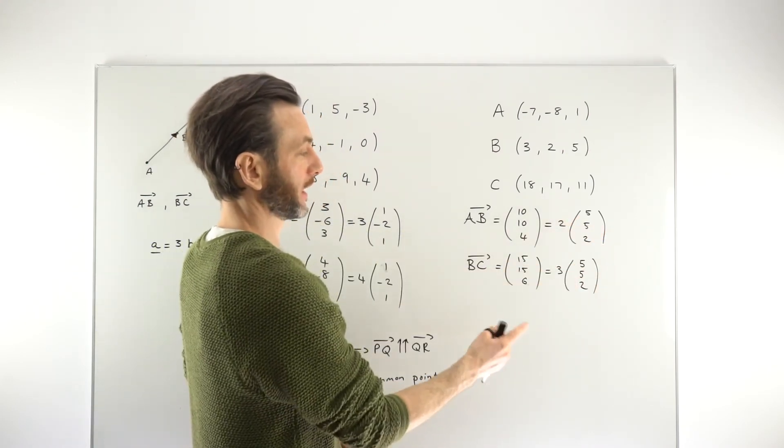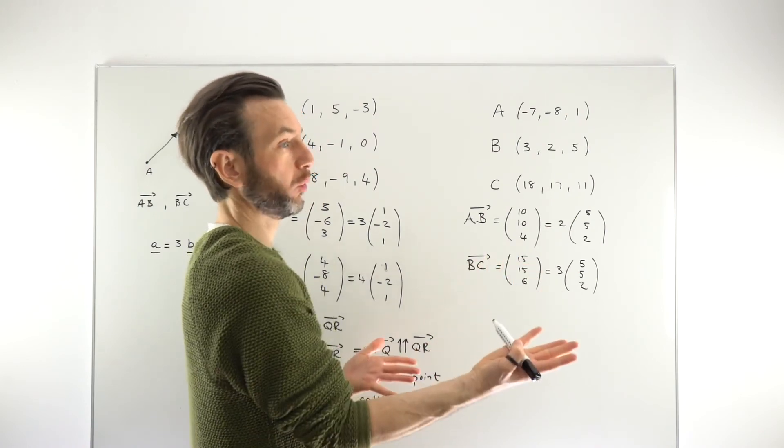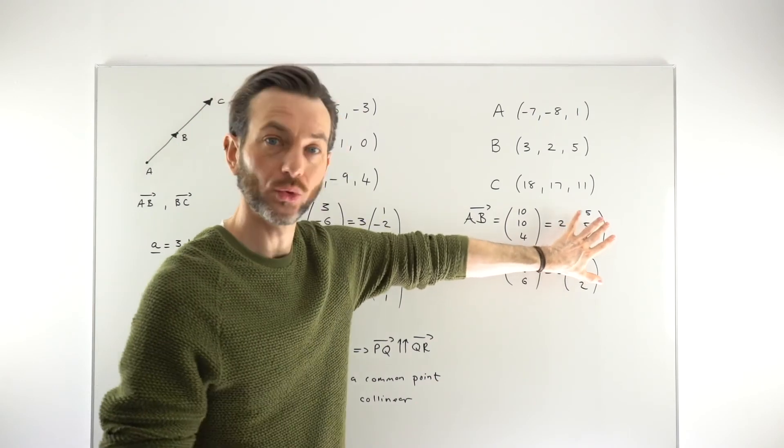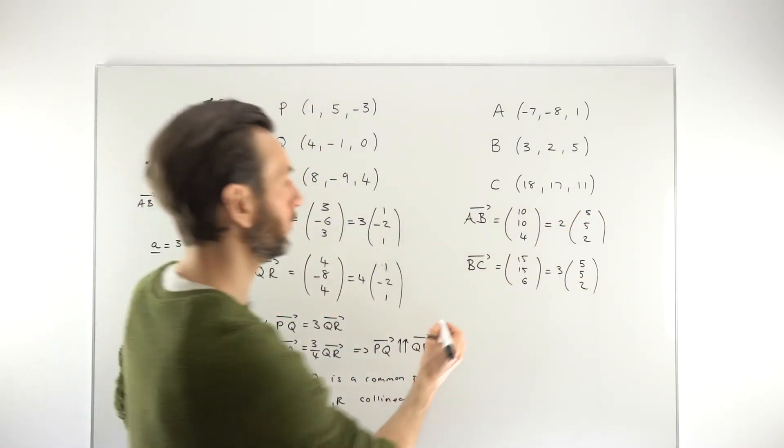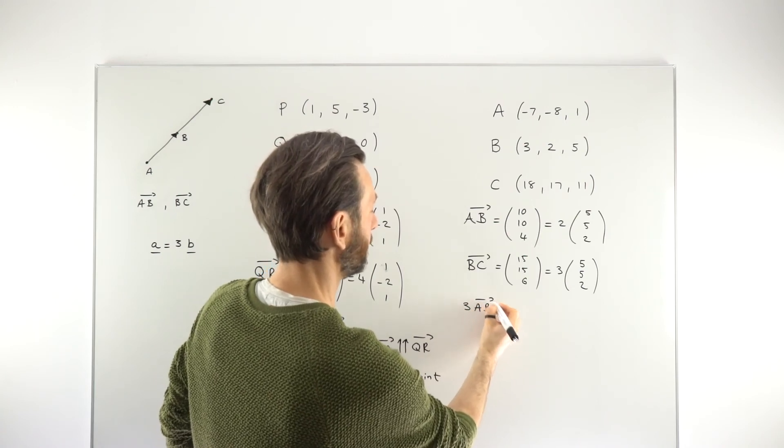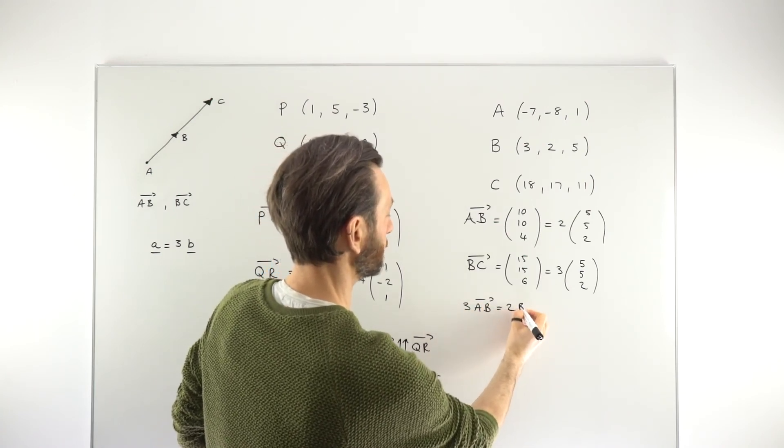This already shows that these vectors are parallel. You might just want to formalize that a little. So again, we could say something like 3 times AB equals 2 times the vector BC. So we're showing that multiple.